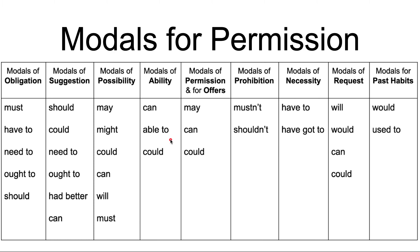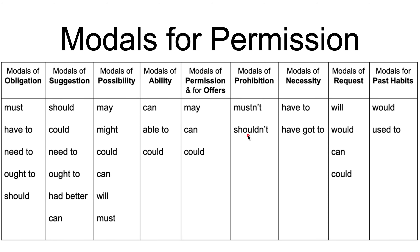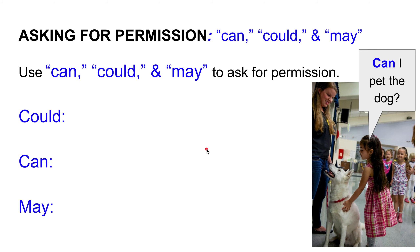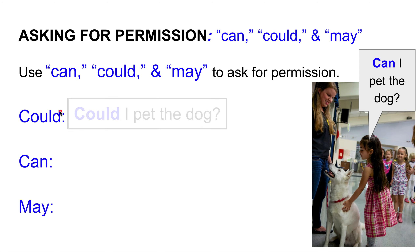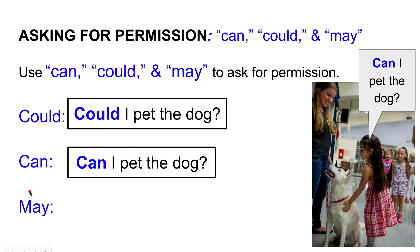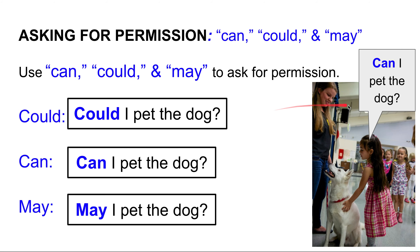Now let's talk about permission. The modals for giving permission are 'may,' 'can,' and 'could.' We use 'can,' 'could,' and 'may' to ask for permission. For example: 'could I pet the dog?', 'can I pet the dog?', 'may I pet the dog?'